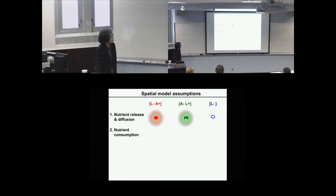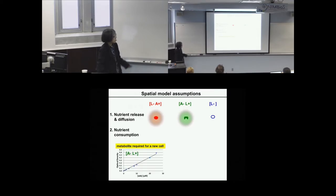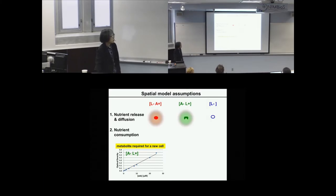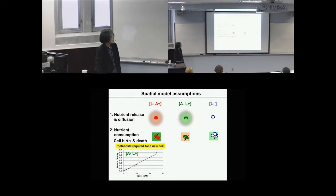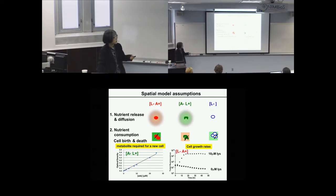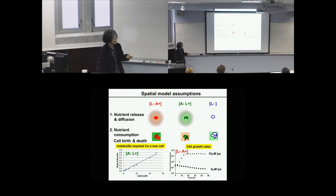The second assumption is nutrient consumption, measured by looking at how cell density scales as a function of the amount of metabolite released. From the slope we calculate the femtomoles of metabolite required to make a new cell. Nutrient consumption leads to cell birth, and cells also undergo stochastic death. To measure cell growth rate, we used fluorescently labeled cells and tracked total fluorescence intensity over time. From the slopes of these curves, we calculated the net growth rate as a function of different concentrations.